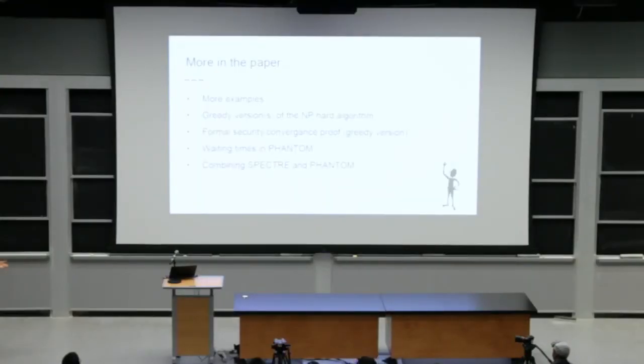Okay. So what more in the paper, there's additional discussion about the greedy versions of this, of phantom, about the waiting times. So phantom has longer waiting times than our previous protocol specter. On the other hand, it has stronger properties. It's a linear order. So you can see this trade off in the paper and you can see how you can combine specter and phantom together to achieve both the good of both worlds. To some extent, there are some trade-offs there.